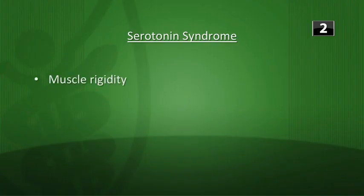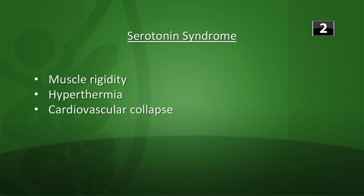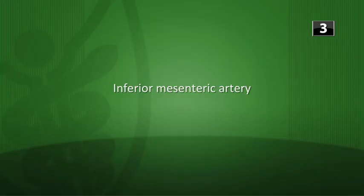Next, what artery prevents a horseshoe kidney from ascending in the abdomen? This is your inferior mesenteric artery. All right, that's it for the warm-up — let's get to that lecture.